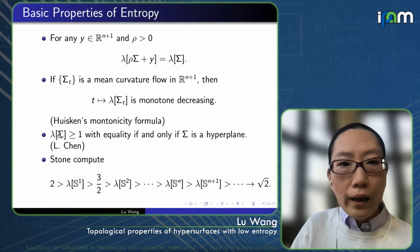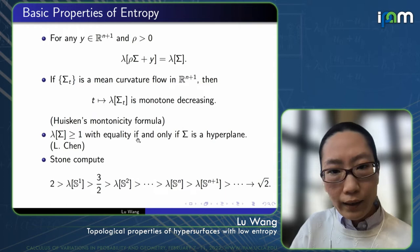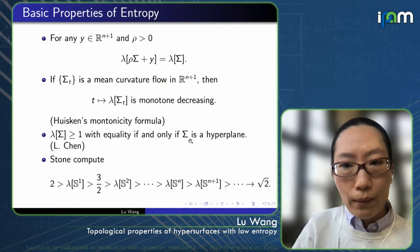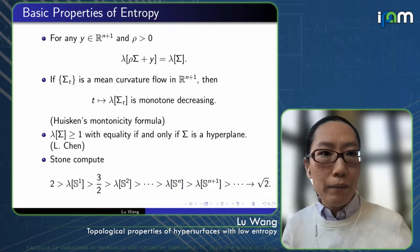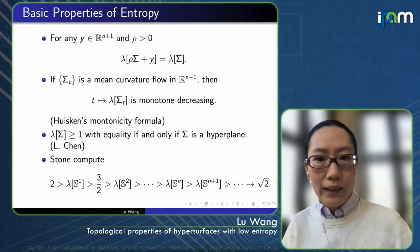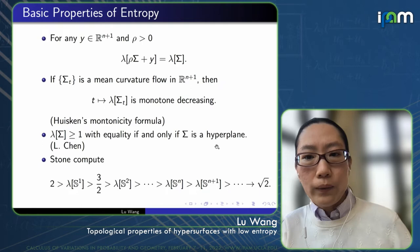The slightly non-trivial fact is that when equality is achieved, sigma indeed has to be a hyperplane. This is due to a result of Luo Tianchen, who has this very nice application of a wide version of Brakke-Luckhaus Regularity Theorem to prove this equality holds if and only if sigma is a hyperplane.